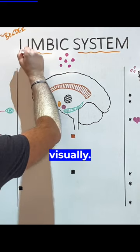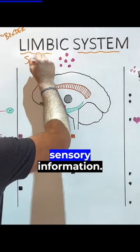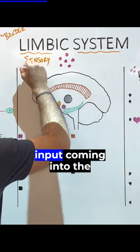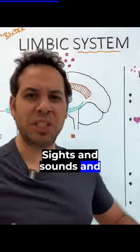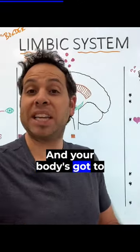So for example, think about this visually. You have all this sensory information, we'll call this sensory input, coming into the brain. What is this? Sights and sounds and smells. And your body's got to do something with it.